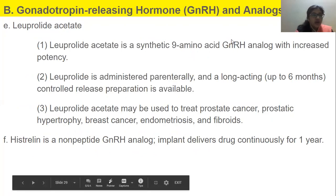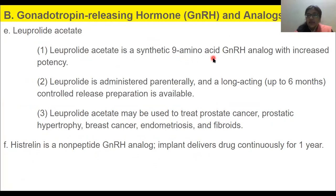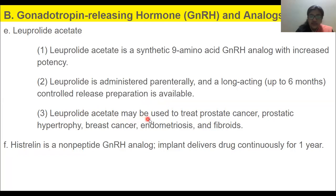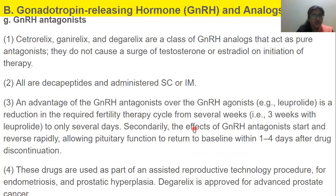Leuprolide is a synthetic nine amino acid GnRH analog with increased potency, administered parenterally, and a long-acting controlled-release preparation is available. It may be used to treat prostate cancer, prostatic hypertrophy, breast cancer, endometriosis, and fibroids. Histrelin is a non-peptide GnRH analog implant that delivers drug continuously for one year.